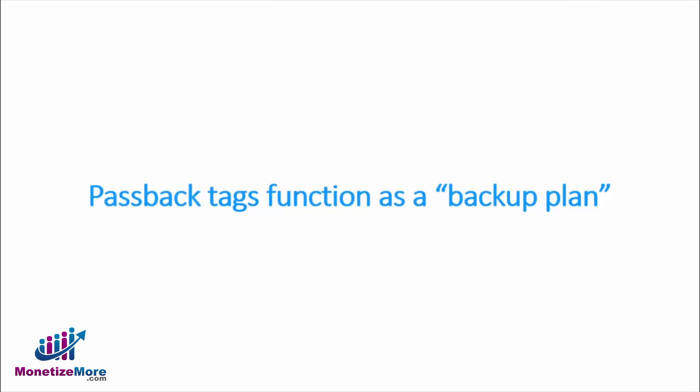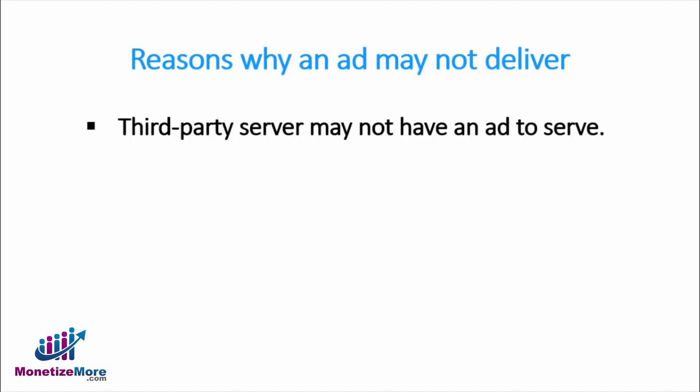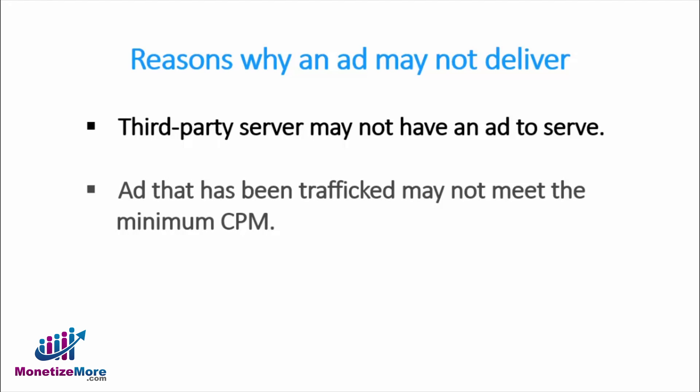Passback tags function as kind of a backup plan in case the ad you planned to serve in the ad slot doesn't deliver. There are a variety of reasons why an ad may not deliver: the third-party server may not have an ad to serve, or an ad that has been trafficked may not meet the minimum CPM. In both cases, the publisher passback tag you create will be served instead, displaying a backup ad from your own DFP network. Passback tags are crucial to ensuring you always have an ad trafficked in your ad slot.